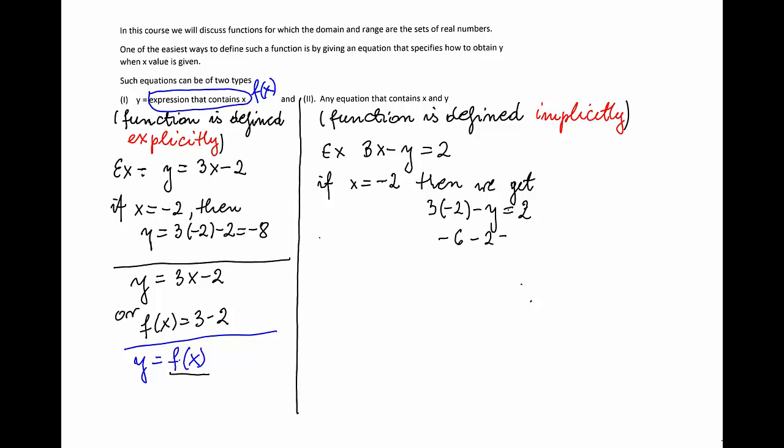So I will have negative 6 minus 2 equals y, and therefore y equals negative 8. I still get the same value as before because that equation is exactly the same as the one.